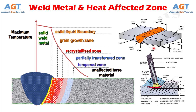In fusion welding, a portion of the base metal surrounding the junction is melted and re-solidified. This zone around the junction that melts and re-solidifies is called Weld Metal, or Weld Bead.